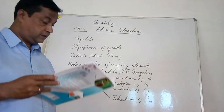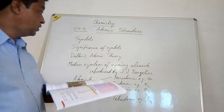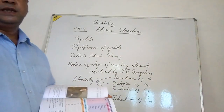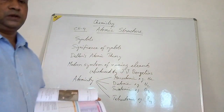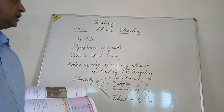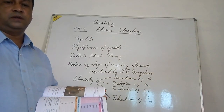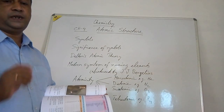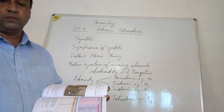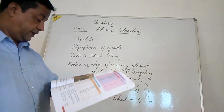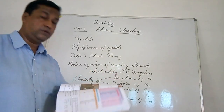Let's see what a symbol means. A symbol is the short form or abbreviated name of an element. The short form of the names of elements is called a symbol.